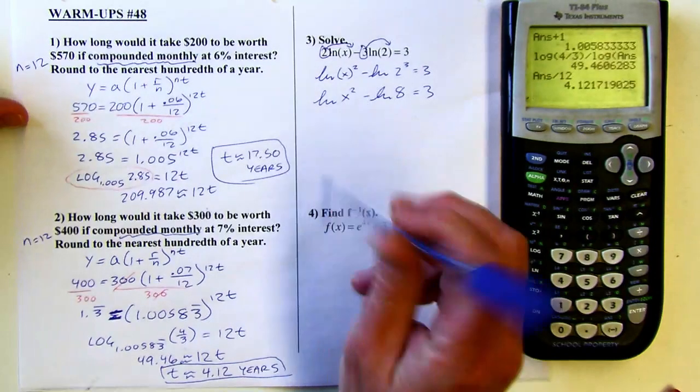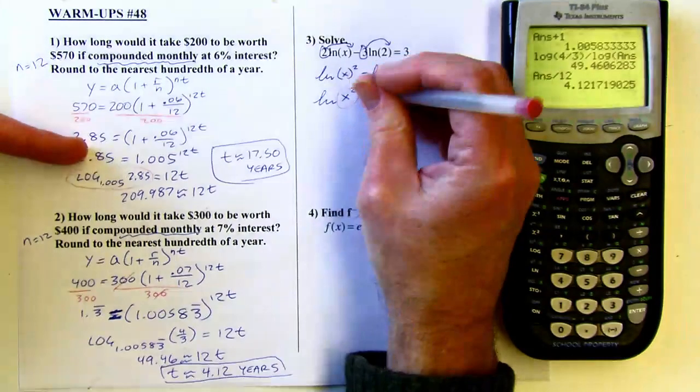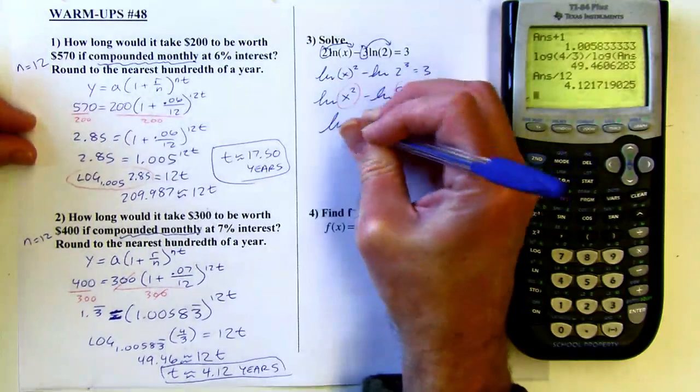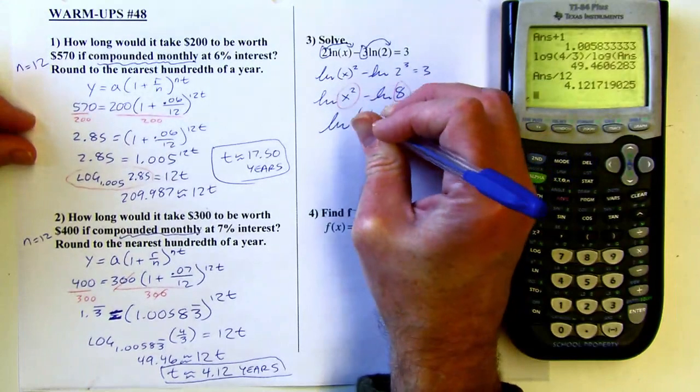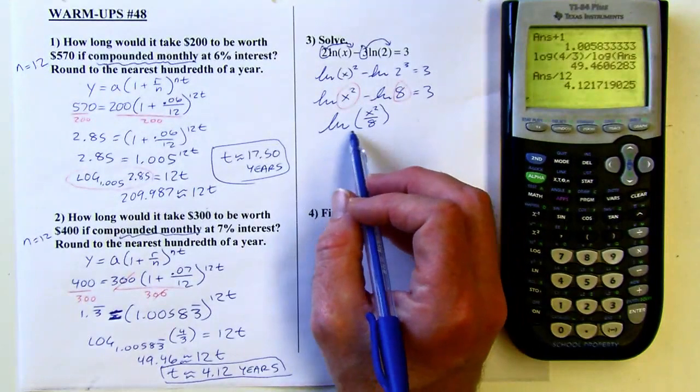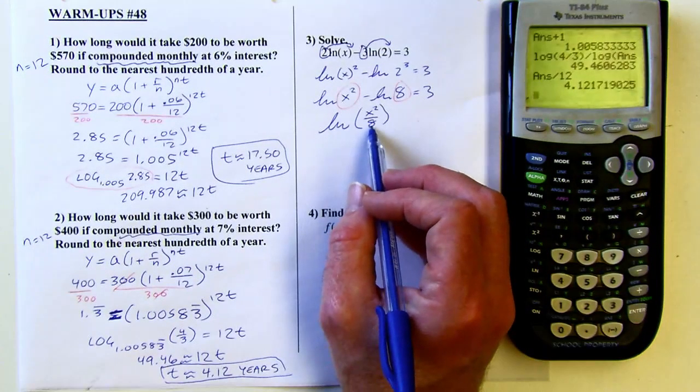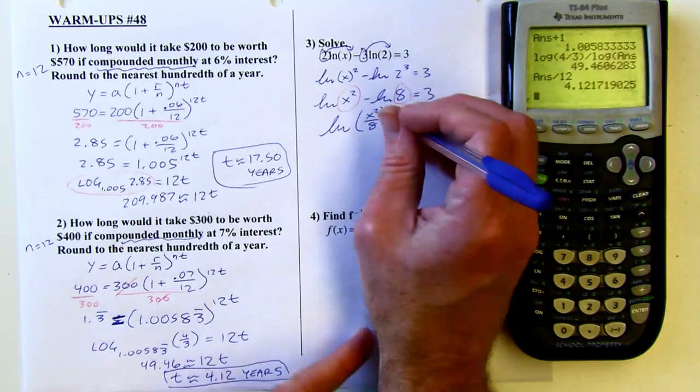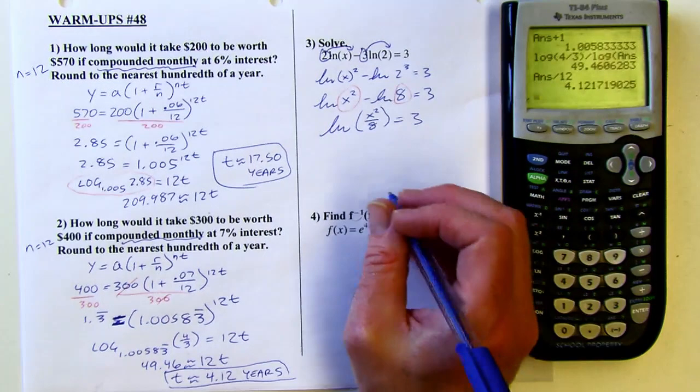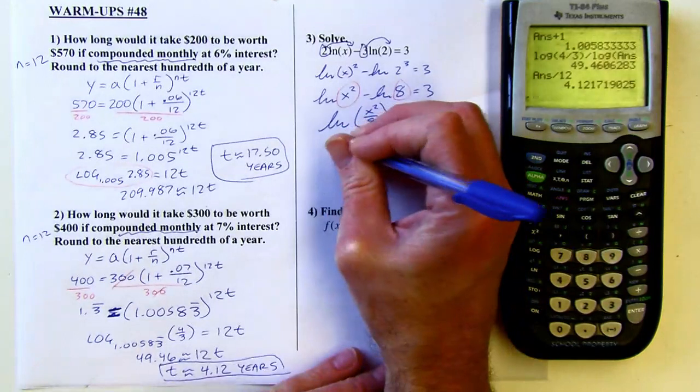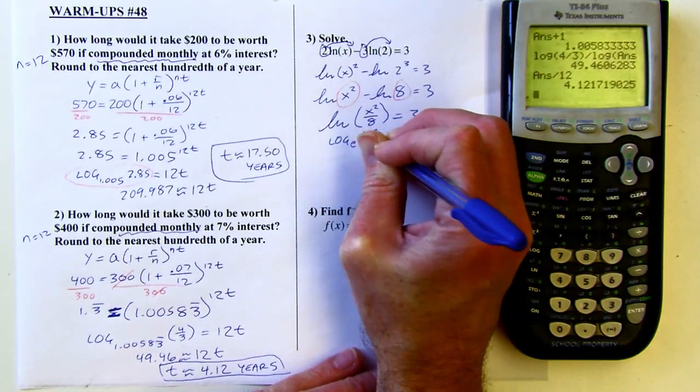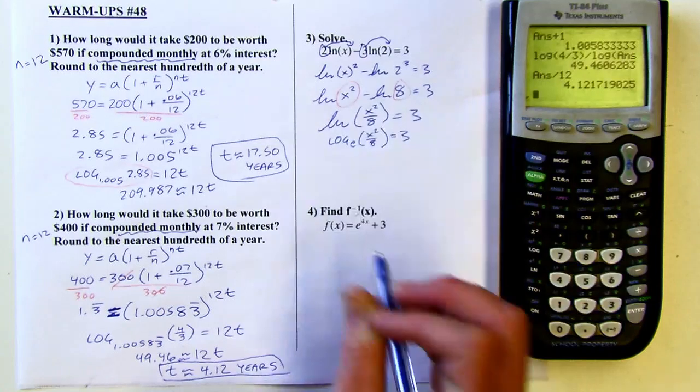And now I can combine these logs. They have the same base. They're both a log with base e really is what natural log is. And when you're subtracting, you are going to take the contents and divide them. So I'll do x squared over eight when I combine this into one log. And I like to use parentheses, right? Just so there's no confusion that eight isn't the base there.